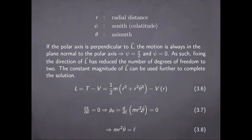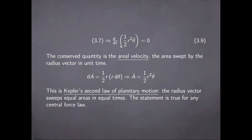What follows from equation 3.7 is that this quantity is constant in time and is equal to what is known as the areal velocity, or the area swept by the radius vector per unit time. The differential area element is written as shown here, so taking its time derivative we obtain this expression. In effect, what we have proved here is known as Kepler's second law of planetary motion: the radius vector sweeps equal areas in equal times. This statement is true for any central force law and is not specific to gravitational problems where Kepler first observed it.